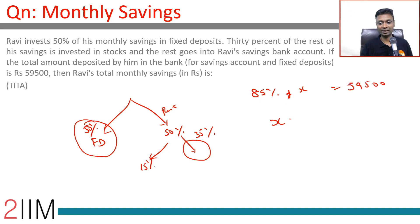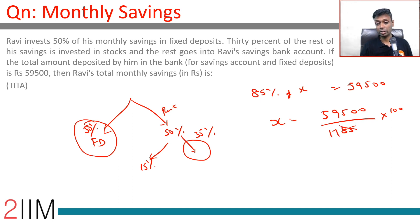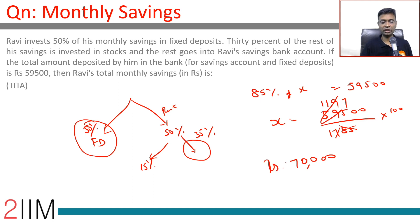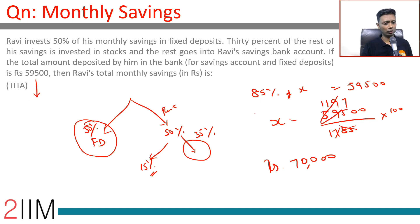Find x: x equals 59,500 divided by 0.85, which is effectively 5,950,000 by 85. Dividing by 5, this becomes 11,900 by 17. 17 goes into it seven times, so x is 70,000. Ravi earned 70,000 rupees — 35,000 in FD, 10,500 in stocks, and the remaining in savings account. FD plus savings account add up to 59,500.